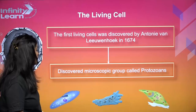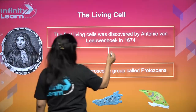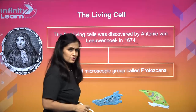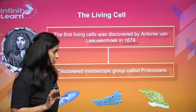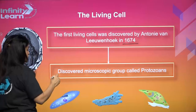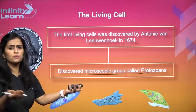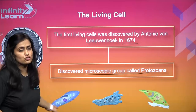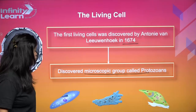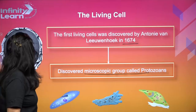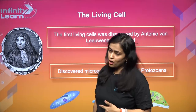Once again, this was Anthony van Leeuwenhoek. He was very keen on observing things - he used to collect water, scrape his teeth and observe everything around him. He discovered microscopic organisms called protozoans. From pond water, he'd get protozoa like amoeba and paramecium. So the first living cell was discovered by Anthony van Leeuwenhoek.